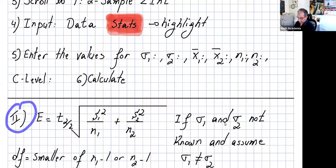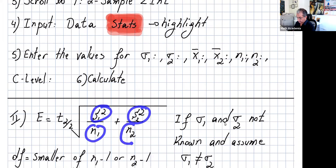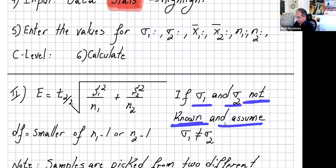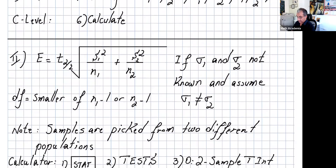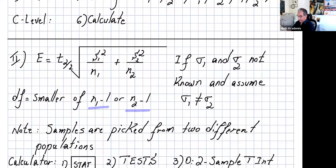Case 2: E equals t sub alpha/2 times the square root of (s1 squared over n1 plus s2 squared over n2), when sigma1 and sigma2 are not known and we assume sigma1 is not equal to sigma2 — basically the samples are from populations with different standard deviations. Since we use the Student t-distribution, we need degrees of freedom, which in this case is the smaller of (n1 minus 1) or (n2 minus 1).